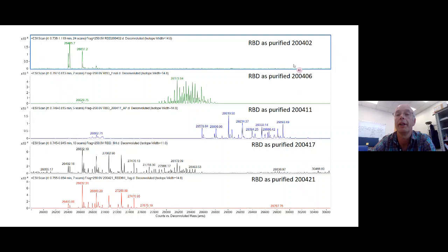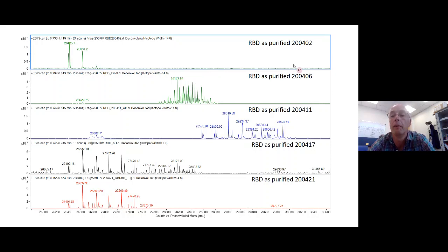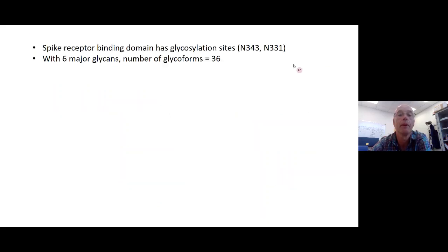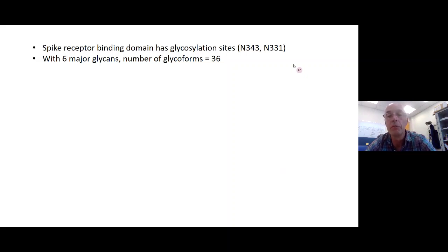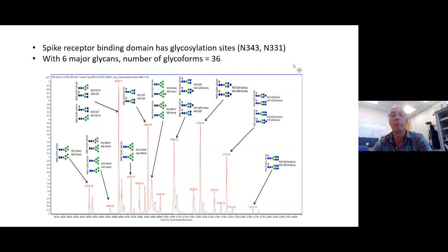The degree and type of glycosylation is going to be determined by the host cell expression system and the growth conditions, and because of that we have seen substantial variation in spike glycosylation from batch to batch. To illustrate that: this is the receptor binding domain — a small portion of spike with only two glycosylation sites — and yet you can see considerable variation in the glycosylation envelope from one purification to the next. If we assume a simple case with only six major glycans, the number of possible glycoforms would be six squared — 36 — which is manageable and can be analysed by intact mass. However, there's a problem: with two glycosylation sites, there are two possible structures from the observed mass, so we're not getting positional information.